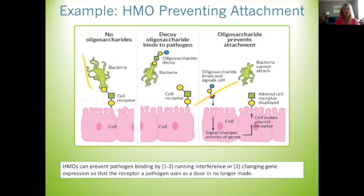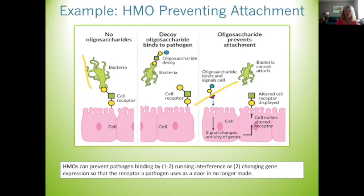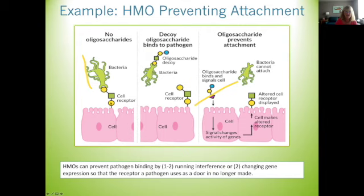Note: the yellow lines on the slides are from a student trying to take notes in the shared screen — they showed up for everyone. Now here's the illustration: this is a gut cell of an infant that is formula-fed and therefore has no HMOs. Pathogenic bacteria like Salmonella enter cells by binding to cell surface receptors — this is how they take over the machinery, break down the cells, and make the baby sick.